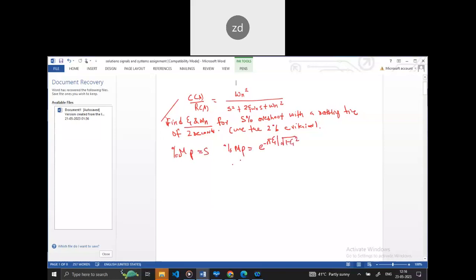So substitute here and multiply by 100 because it's a percentage. So this 5 would be equal to e^(-πζ/√(1-ζ²)) times 100. We can take this 100 to the other side, so 100 divided by 5 gives us 0.05.